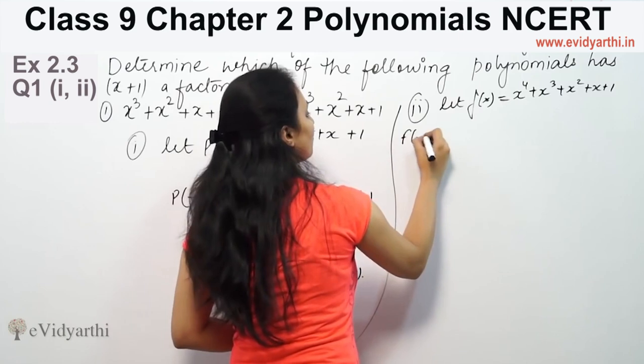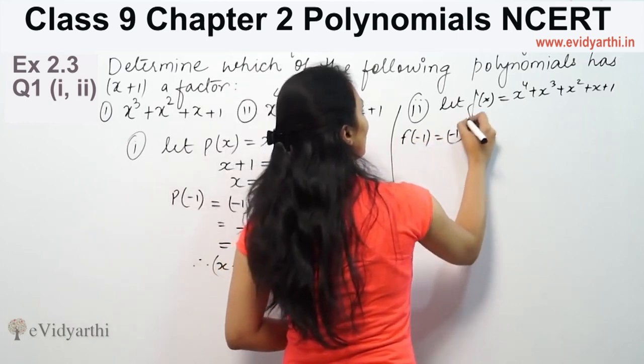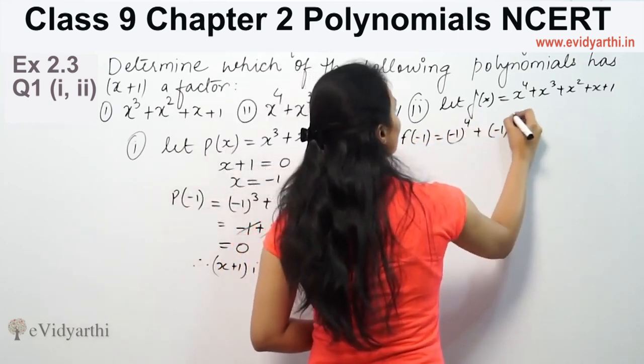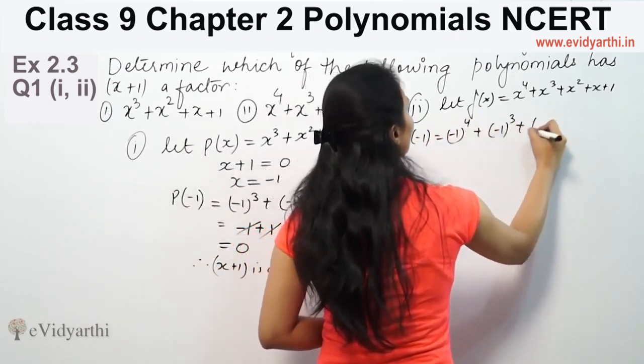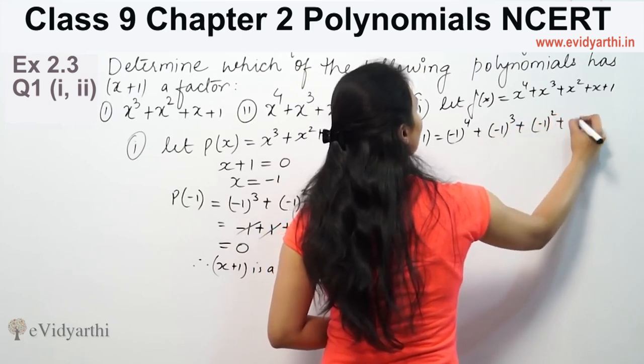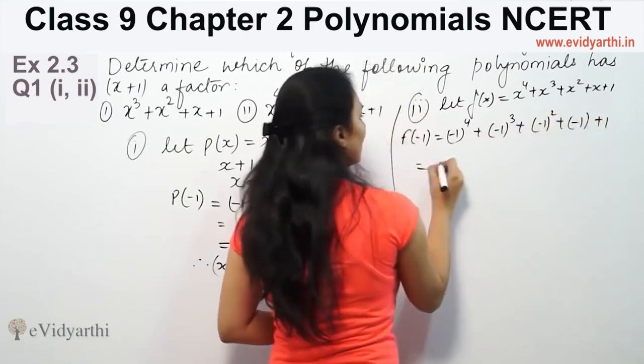We compute f of minus 1: minus 1 raised to the power 4, plus minus 1 cubed, plus minus 1 squared, minus 1 plus 1.